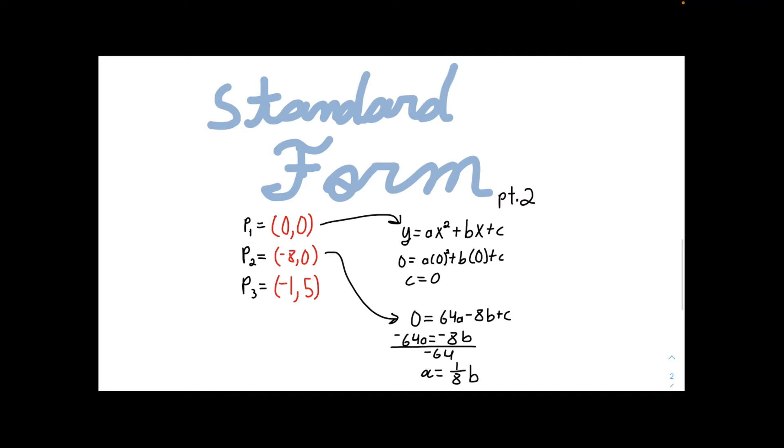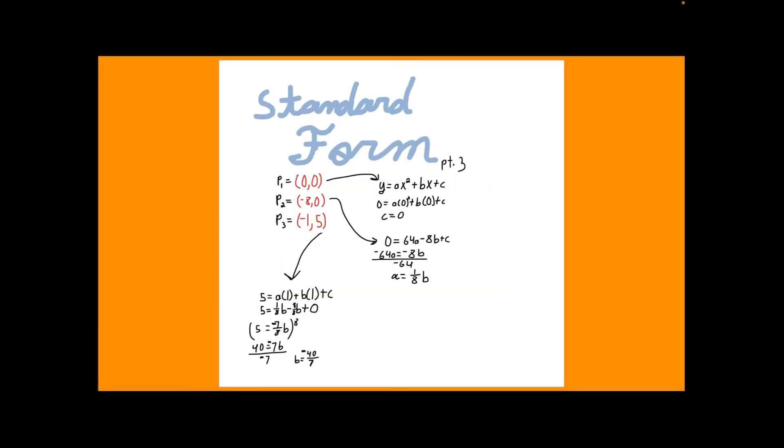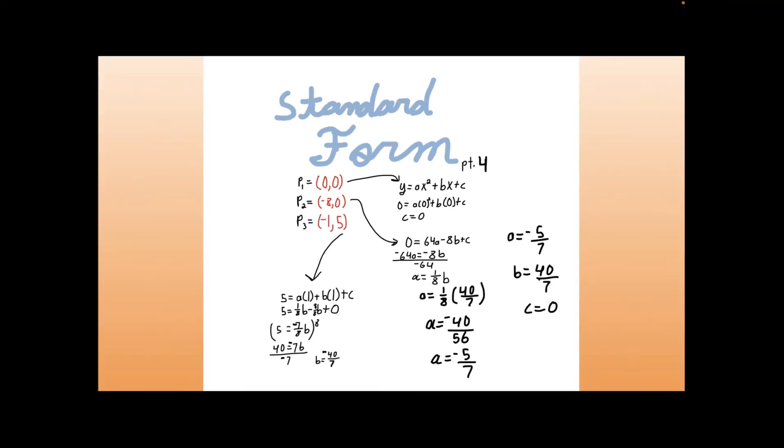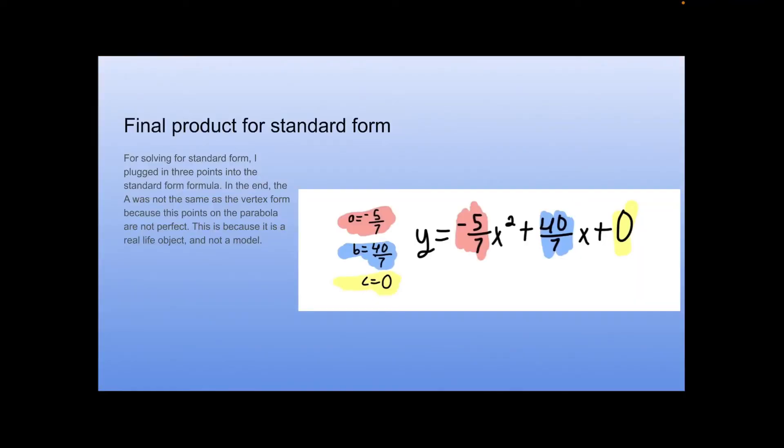And then I plugged that into the third point and found that b equals negative 40 over 7. And now I have to take that b and plug it back into the 1 over 8b. And in that, I found that a equals negative 5 over 7. So my final product was y equals negative 5 over 7x squared plus 40 over 7x plus 0.